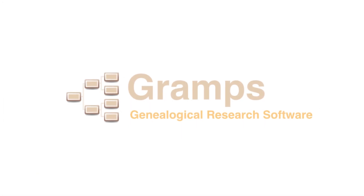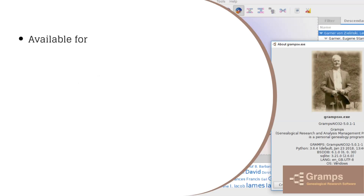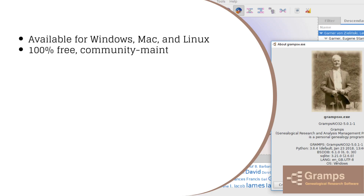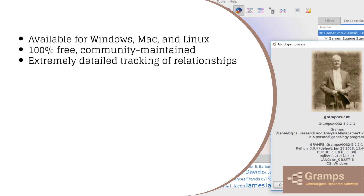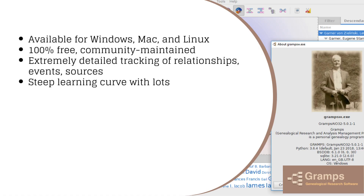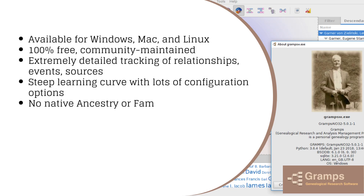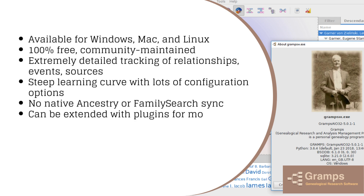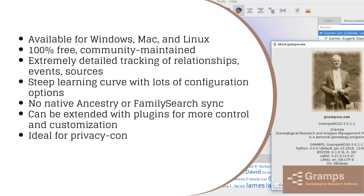Gramps is open source, available for Windows, Mac, and Linux, and 100% free — community maintained. It offers extremely detailed tracking of relationships, events, and sources, but has a steep learning curve with lots of configuration options. There's no native Ancestry or FamilySearch sync, though it can be extended with plugins. It's ideal for privacy-conscious researchers or those who like to tinker.